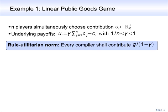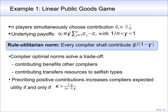If a player contributes one more unit of money, his own monetary payoff is reduced by 1 minus gamma. Since a compliant player feels utility of g if he violates a norm, the highest contribution that a compliant player can be induced to make is given by g divided by 1 minus gamma. Since the sum of payoffs is strictly increasing in the sum of contributions, a rule utilitarian norm prescribes compliers to contribute this maximum amount, g divided by 1 minus gamma.